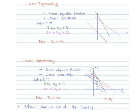In an optimization problem, we have a linear objective function under linear constraints. For example, here we have two variables x1 and x2. We have two linear constraints on these: 2x1 plus x2 less than or equal to 4, that is shown here in green line.